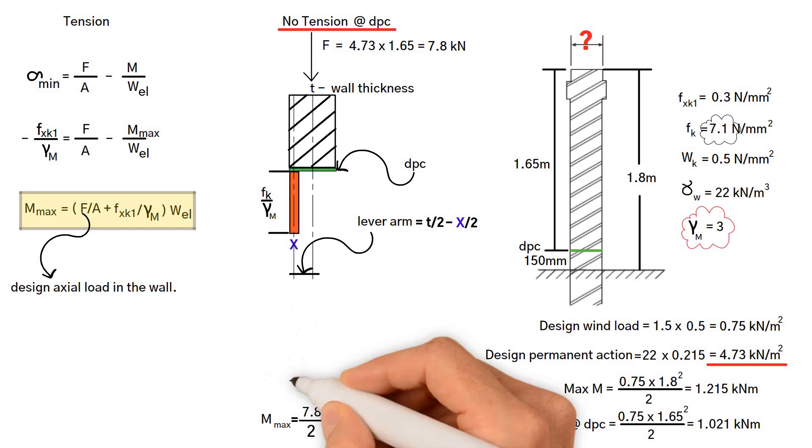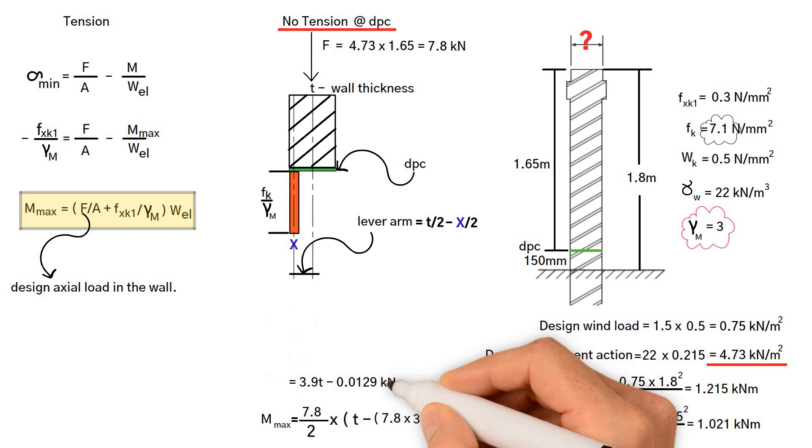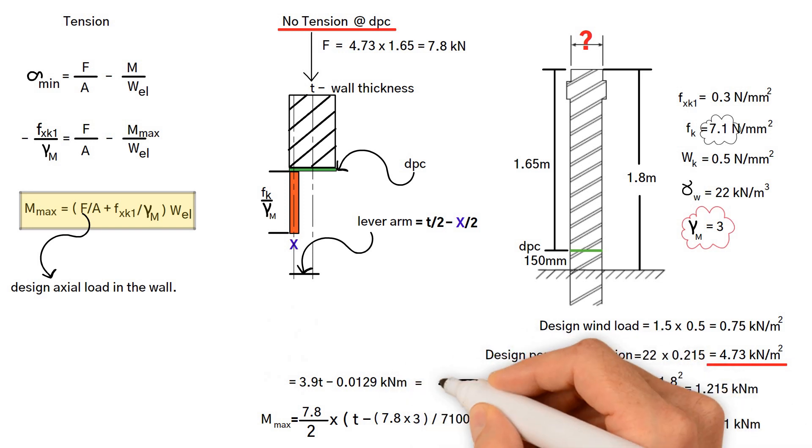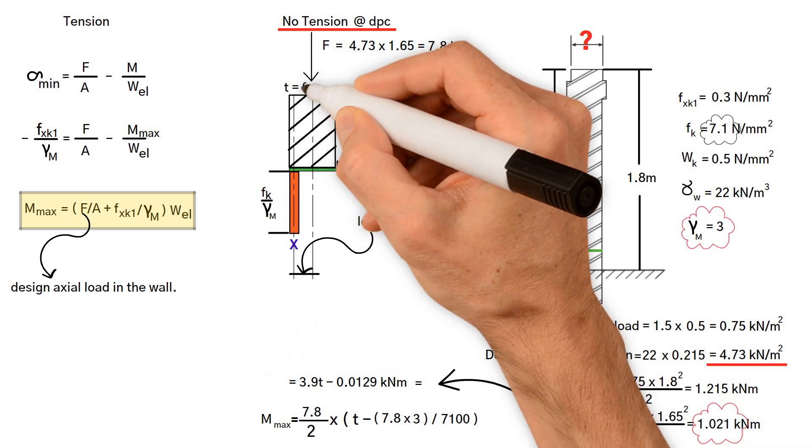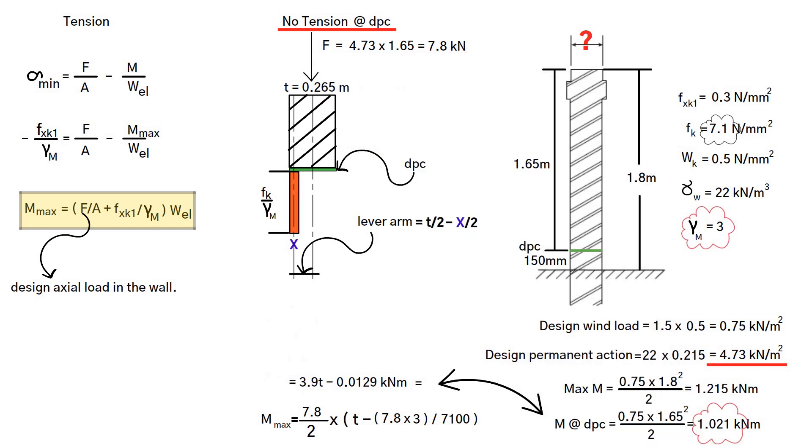As a result, the maximum moment is equal to 3.9 wall thickness minus 0.129 kilonewton meter. Equate this with the moment at DPC level 1.021 kilonewton meter. Hence, T equals 0.265 meters.